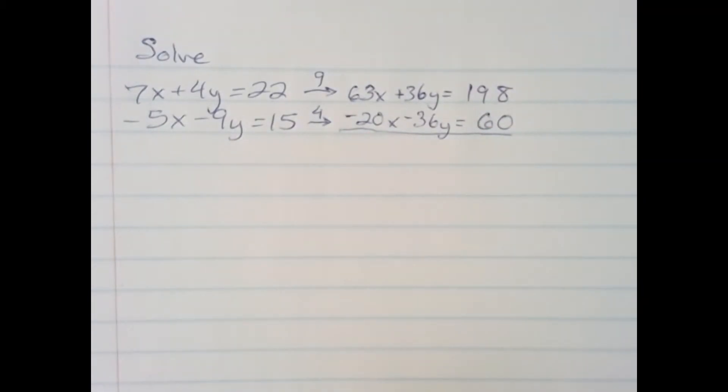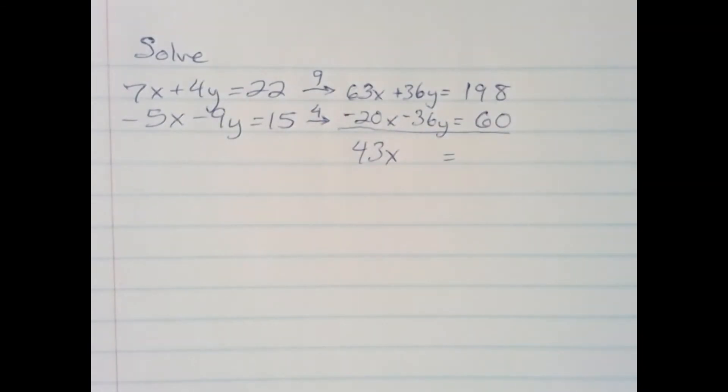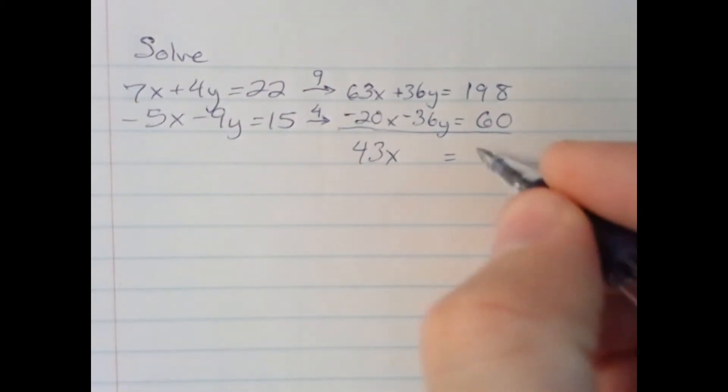Upon adding these equations together, I will get 43x. The y's cancel out because positive and negative 36, and then 198 plus 60 gives me 258.